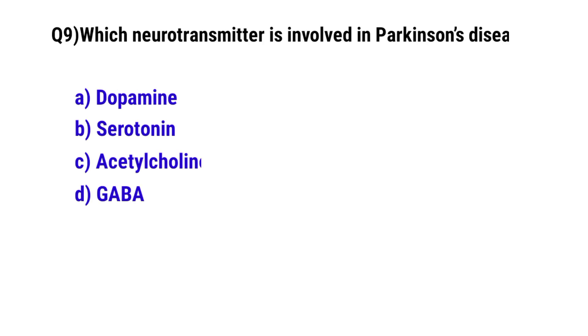Question No. 9: Which neurotransmitter is involved in Parkinson's disease? The correct option is A: Dopamine.